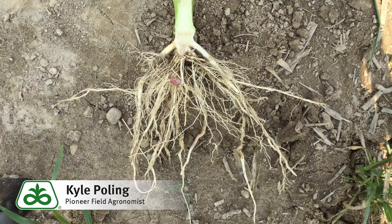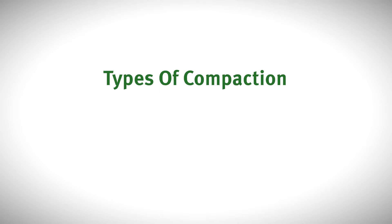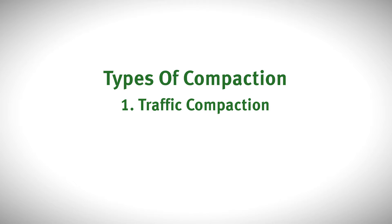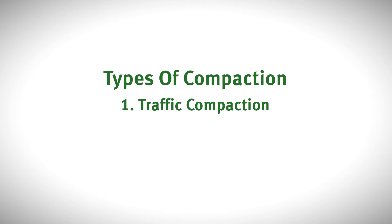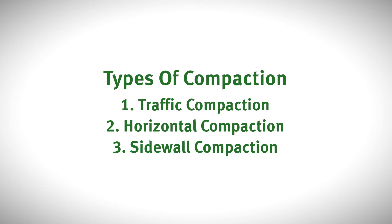However, roots will take the path of least resistance. Any compaction or density layers within the soil will impede normal root growth. There are three primary types of compaction: compaction caused by traffic, horizontal compaction, and sidewall compaction.